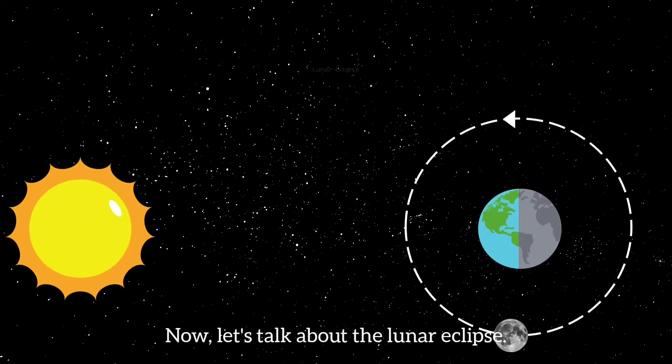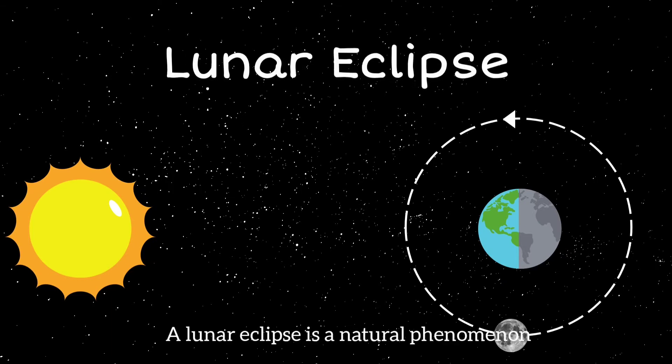Now, let's talk about the lunar eclipse. A lunar eclipse is a natural phenomenon that can only happen in a full moon phase. During a lunar eclipse, Earth gets in the way of the sun's light, hitting the moon.